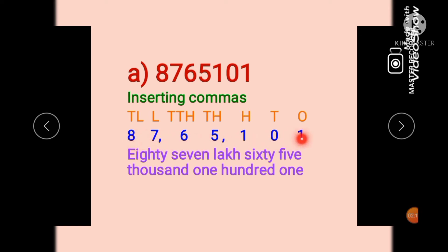In this way we have arranged the digits in the place value chart. Now we insert commas to separate the periods. One's period is made up of ones, tens, and hundreds. Thousands period is made up of thousands and ten thousands. Lakhs period is made up of lakhs and ten lakhs. So this number is one lakh sixty-five thousand one hundred and one.